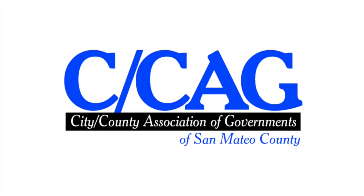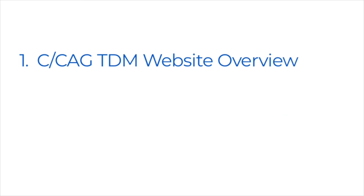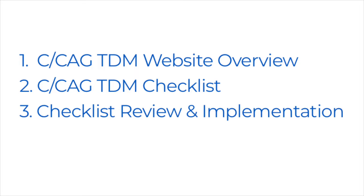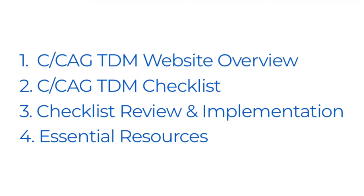This video will cover four topics relevant to the CCAG TDM Policy. The first topic is an overview of the CCAG Transportation Demand Management website. The second topic is the CCAG TDM Checklist, where we will describe the process for selecting, filling out, and submitting the appropriate checklist, and provide two examples. The third topic will summarize the checklist review and implementation process. Lastly, we will go over essential resources that may be of use to you.